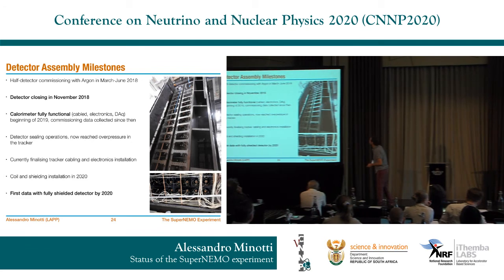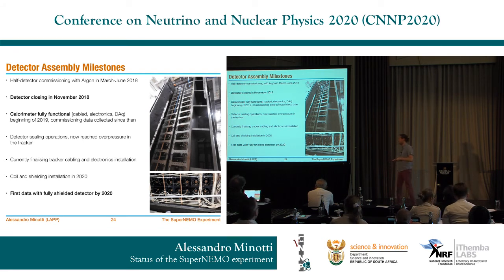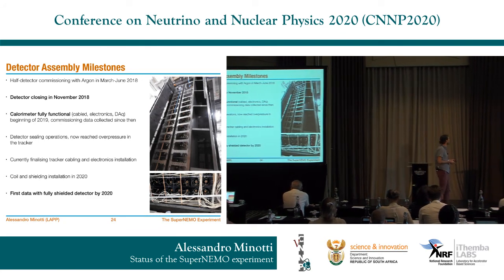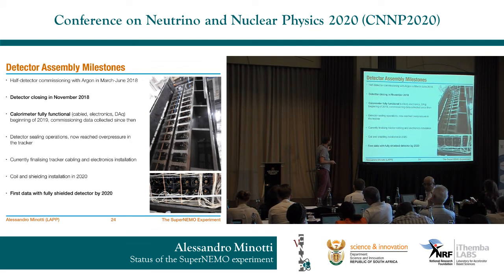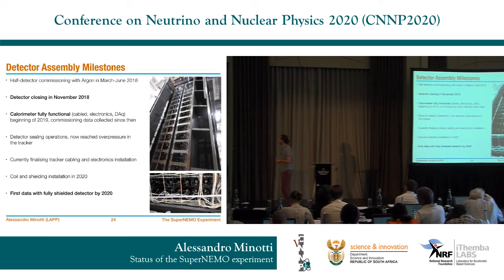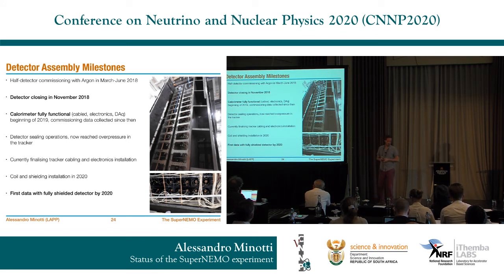A few milestones of the SuperNEMO assembly: a half-detector with tracker and calorimeter was tested in 2018; the detector was closed in 2019 at the end of the year; shortly after, the calorimeter started taking data and is fully functional with electronics and cabling plugged in. We have been commissioning the calorimeter and taking data for the last year. On the other hand, gas sealing operations are still ongoing — we are working to reach overpressure so we can fill the tracker without losing gas — and tracker electronics installation and cabling is still in progress. We expect to finish installation and install the coil and shielding by the end of 2019, meaning data taking will start officially in 2020.